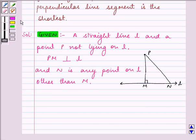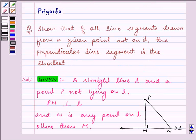So this describes the question. We have shown that of all the line segments drawn from a given point, we have just taken two line segments. One is perpendicular and one is not perpendicular.